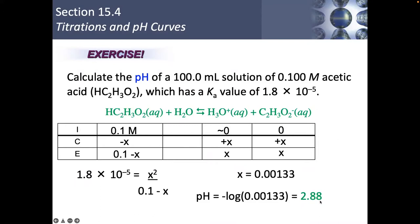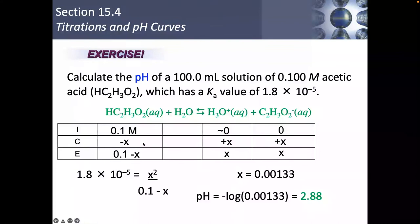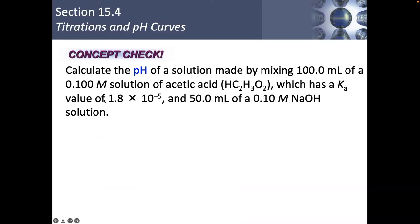Remember: when you're in the buffer region, you need to do stoichiometry first with a BCA table and then look at the equilibrium with an ICE table. Here I didn't need to do that because I'm not actually mixing it with anything. Let's do another one: calculate the pH of a solution made by mixing 100 mL of 0.100 M acetic acid (Ka = 1.8 × 10⁻⁵) with 50 mL of 0.1 M NaOH.